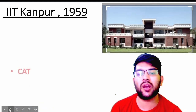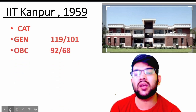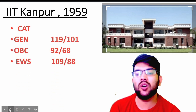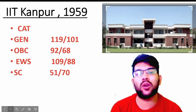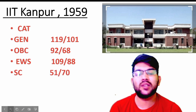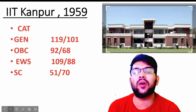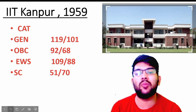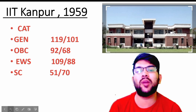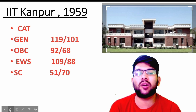Now if you talk about IIT Kanpur, it was established in 1959. For general, 119 and 101 marks; for OBC, 92 and 68 marks; EWS, 109 and 88 marks; for SC it is 51 and 70 marks, because sometimes more female candidates apply for a particular IIT — that's why the cutoff for female candidates can be higher. Cutoff depends on the number of applicants for a particular IIT. If suppose no one applies for IIT Bombay — which is not the case — but if that were the situation, then IIT Bombay's cutoff could be 5,000 or 10,000 rank as well.